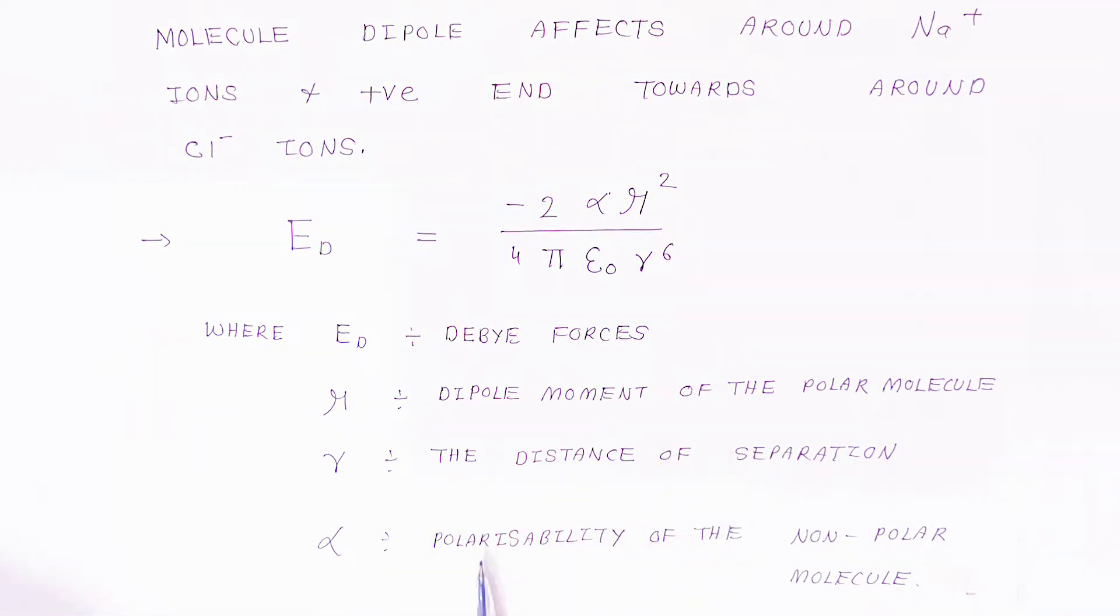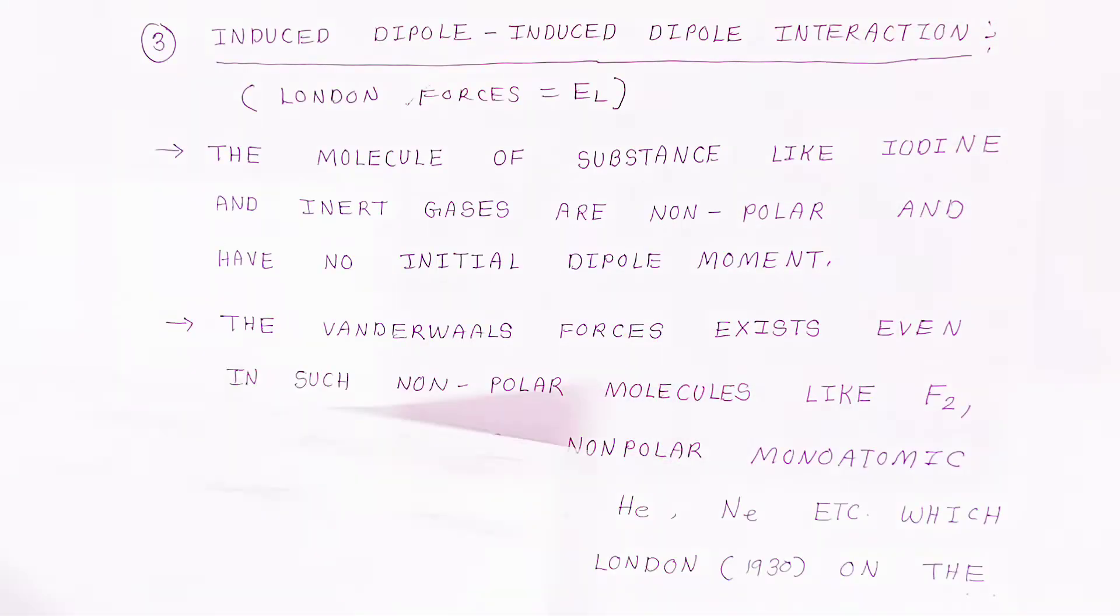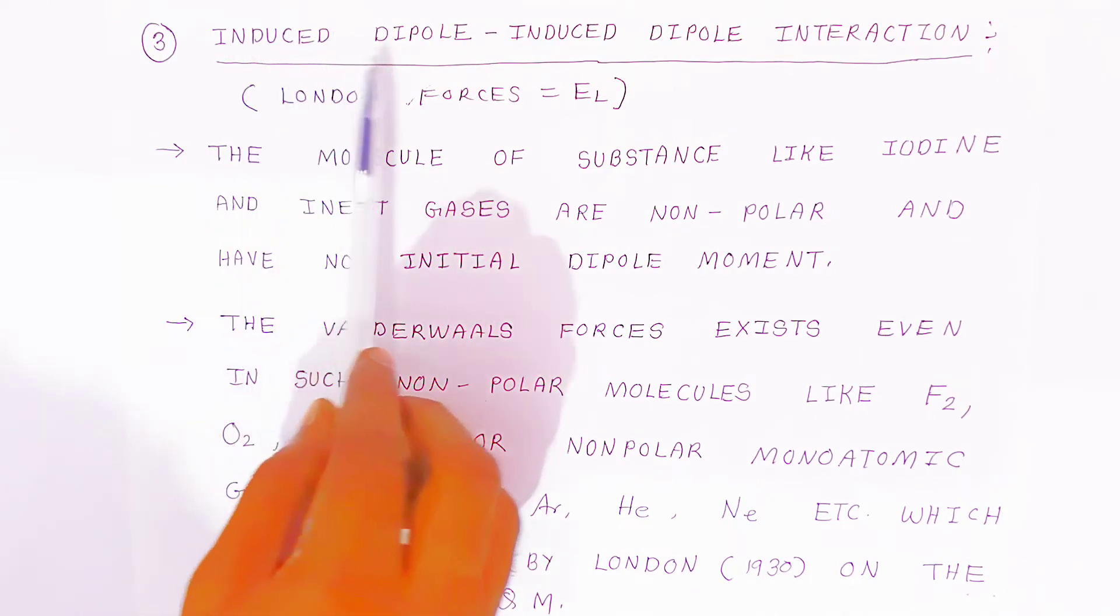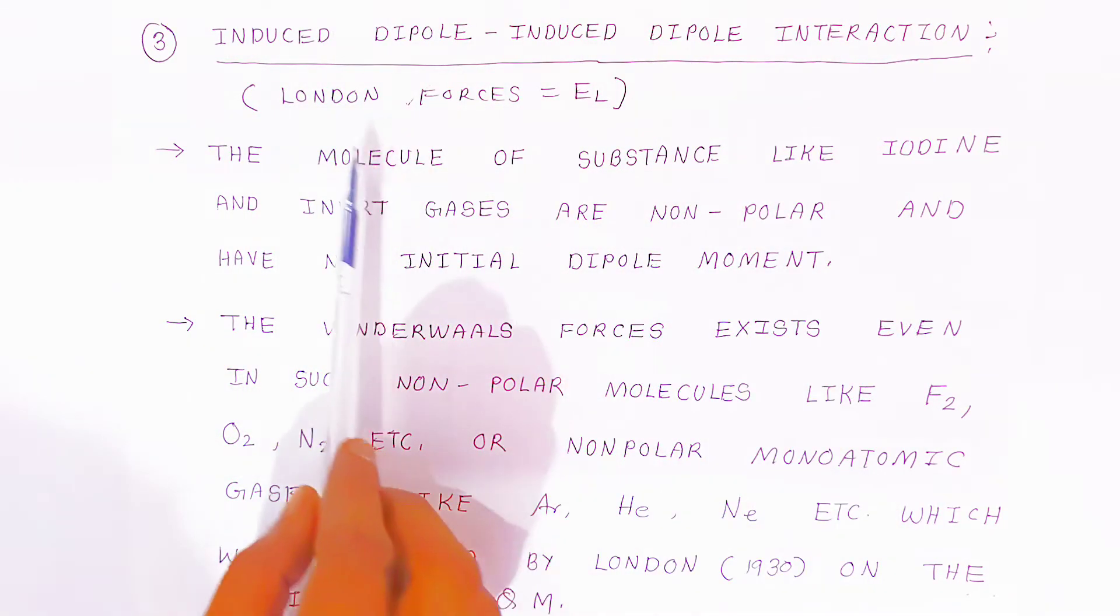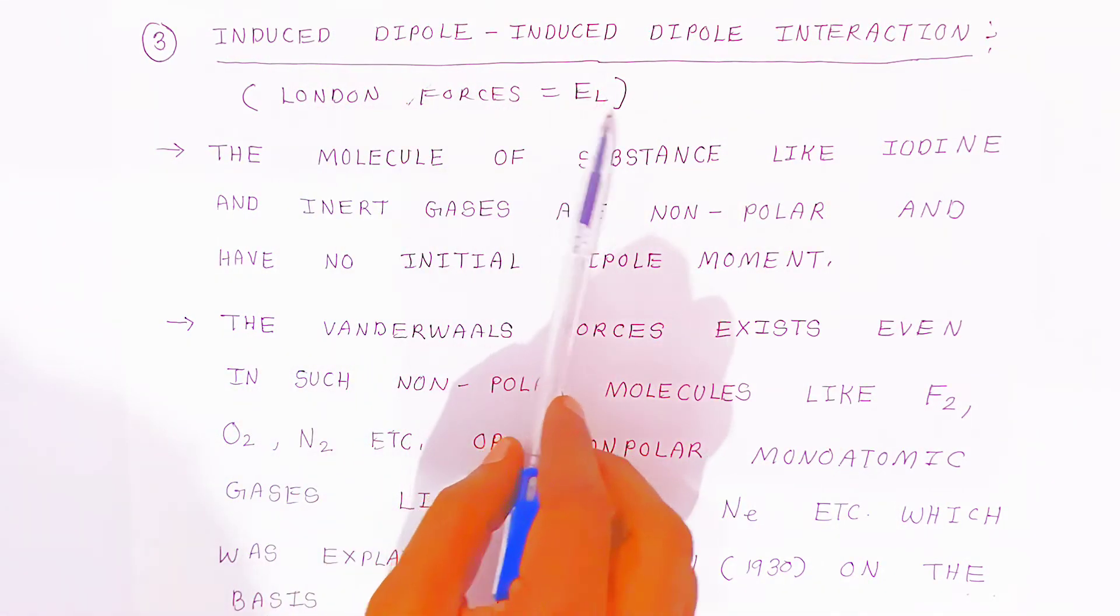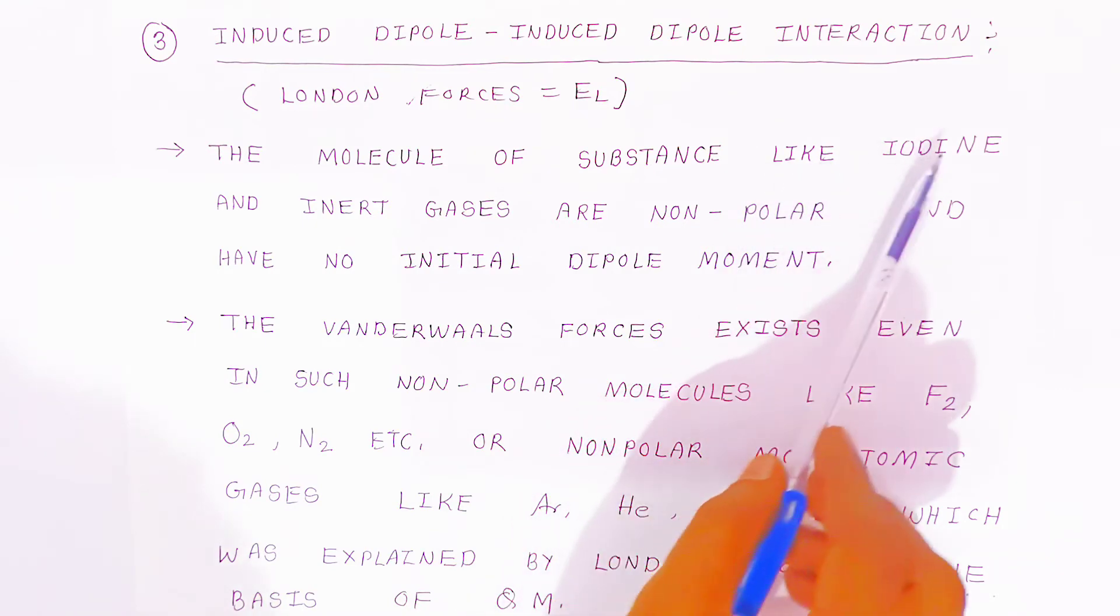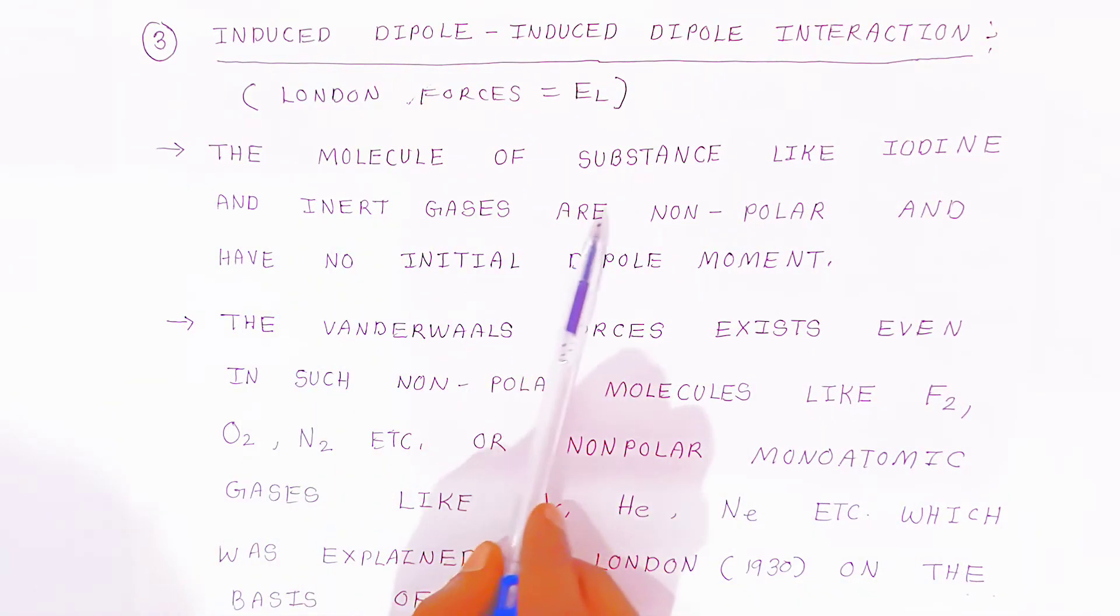Third type of Van der Waals force is called induced dipole-induced dipole interaction, also called London forces, represented by E_L. The molecules of substances like iodine and inert gases are non-polar and have no initial dipole moment.